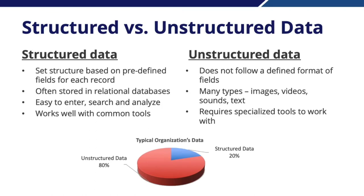Unstructured data does not follow any predefined format or fields. Examples include images, videos, sounds, or text — where there are no predefined fields or even a predefined length. A sentence can consist of any arbitrary number of words, and a document can consist of any arbitrary number of sentences, so it's hard to predefine a structure to capture something like text. Unstructured data generally requires specialized tools to work with, making it more challenging for individuals in an organization without the right toolset.